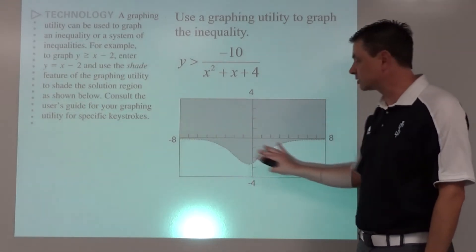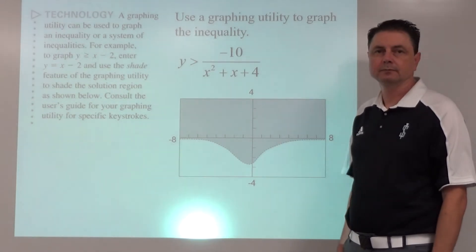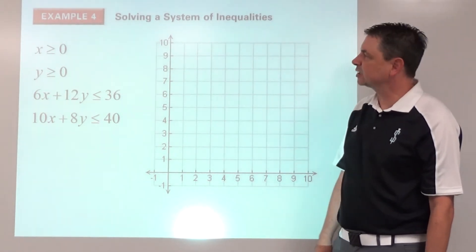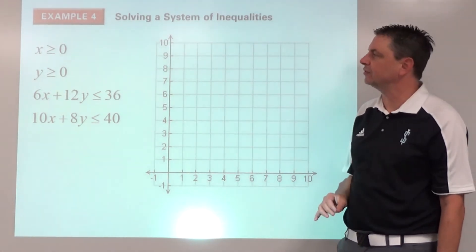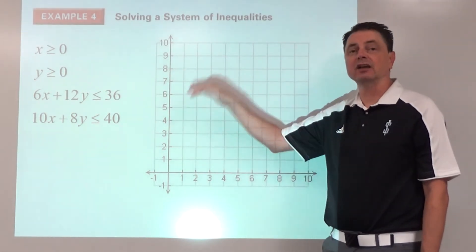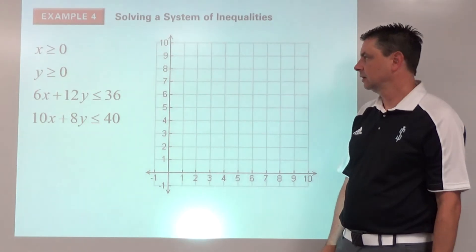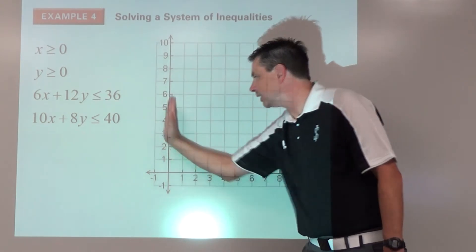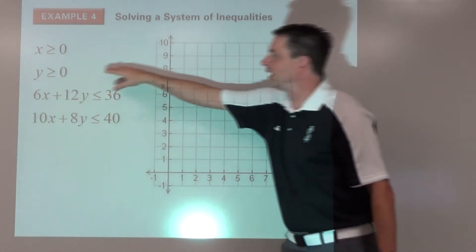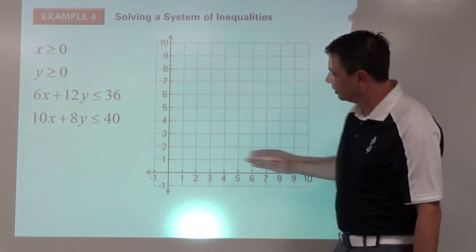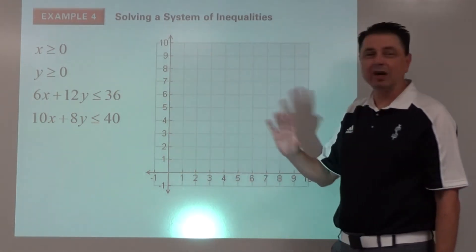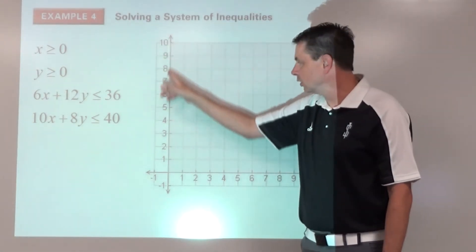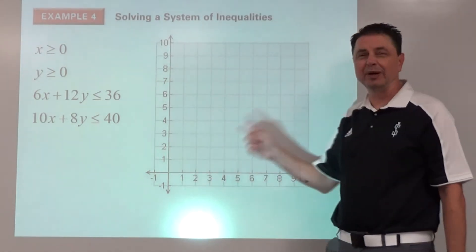All right, Example number four: Solving a system of linear inequalities. We do so by graphing, and this type of problem sets us up for the next lesson. Beginning with the first two, we've got x is greater than or equal to zero—vertical line, shade right. And then y is greater than or equal to zero—horizontal, shade up. So if we combine those two, essentially we are talking about the first quadrant, but also the axis here and the axis there, so the positive side of both of those axes.